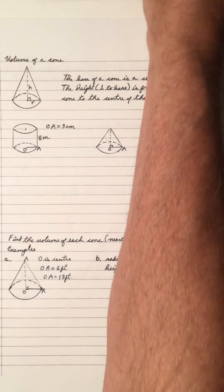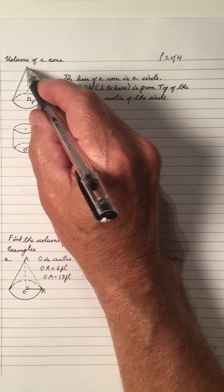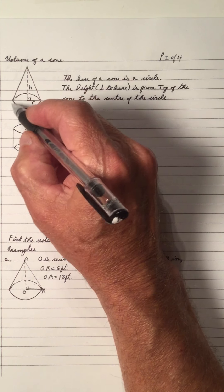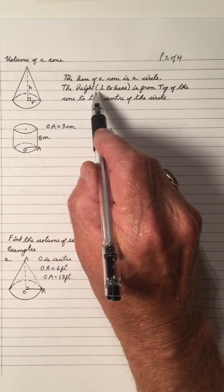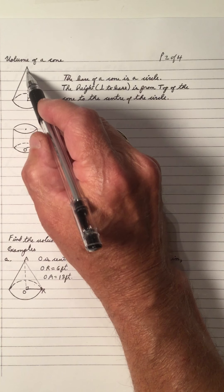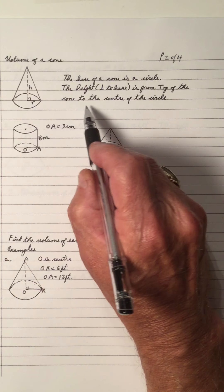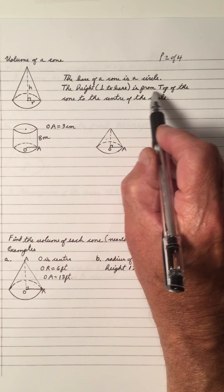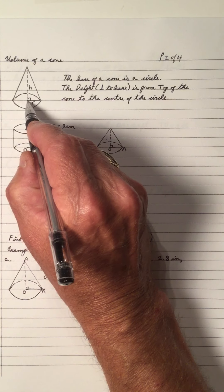Welcome to my video on the volume of a cone. A cone, shaped like an ice cream cone, has a peak and has a circle. The base of a cone is a circle. The height is perpendicular to the base, from the peak perpendicular to the base — from the top of the cone, the peak, to the center of the circle.